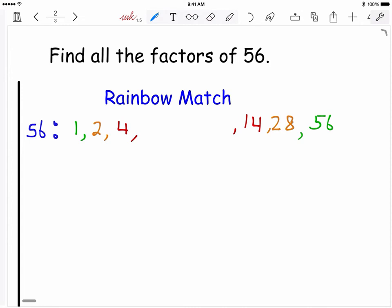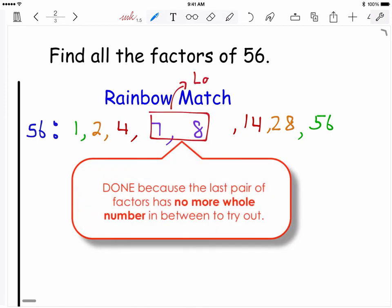If you keep on trying the numbers, the next number after 4 that goes into 56 is 7. So you record that next to the 4 and its partner 8. We know that we are done because the last factor pair we have listed is 7 times 8, which there are no more whole numbers in between 7 and 8 that we can try out anymore.